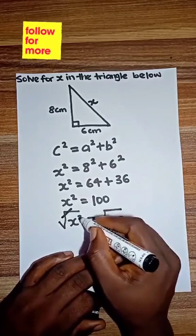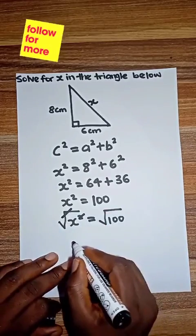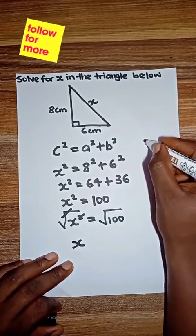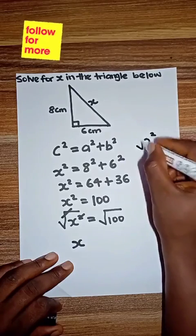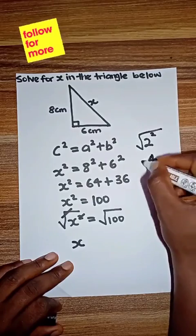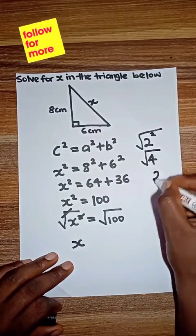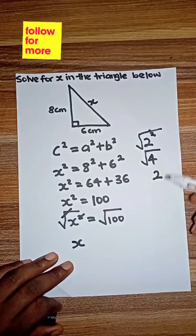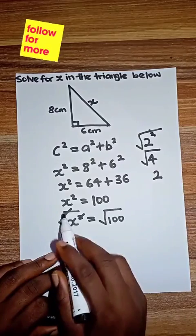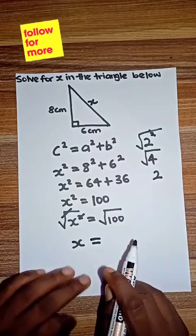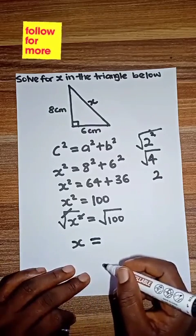When we do that, square root is going to cancel out square to give you x. For example, if you have something like 2², √(2²) - 2² is 4, and √4 is 2. So at the end of the day, these two have canceled out, so you have 2 left. The same thing happened here: square root cancels out square, you have x left.